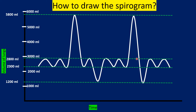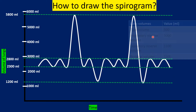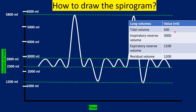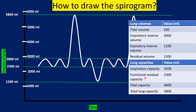This is just to show you how to draw the spirogram — a detailed explanation is in the upcoming video. If you draw the spirogram correctly, you will get these values: tidal volume 500 milliliters, inspiratory reserve volume 3000 milliliters, expiratory reserve volume 1100 milliliters, and residual volume 1200 milliliters.